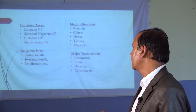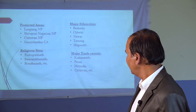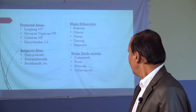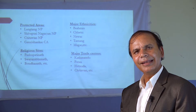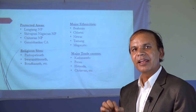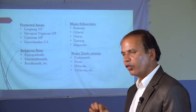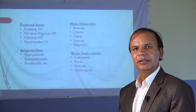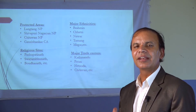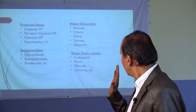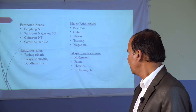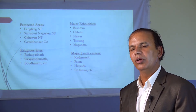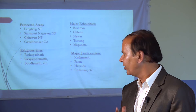The Bagmati Province has altitudinal variation, so according to temperature and climate, it is characterized by three different vegetation zones: tropical evergreen forest, deciduous forest, and coniferous or alpine forest.